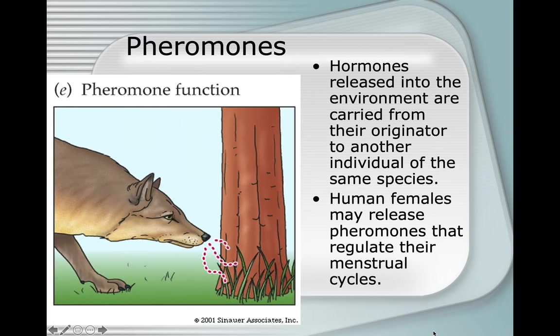Hormones released into the environment are carried from their originator to another individual of the same species. Human females may release pheromones that regulate their menstrual cycles. This is very controversial — we've been looking for human pheromones for a long time, for a couple hundred years, and we haven't been very successful. We think we have, and then it turns out not everybody has the same structures.